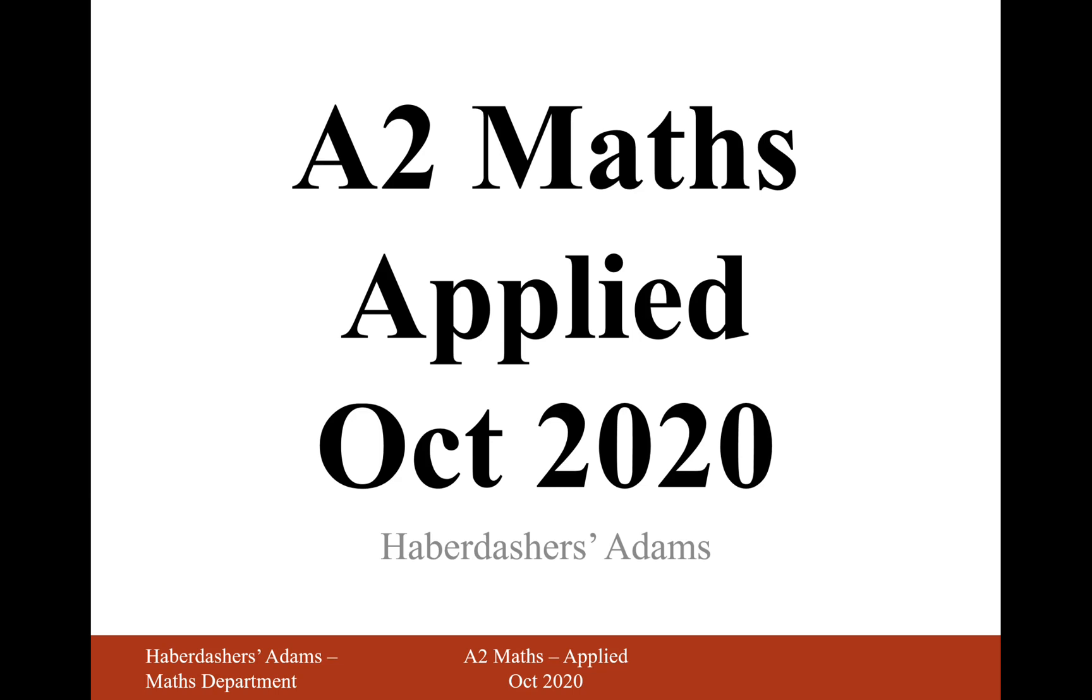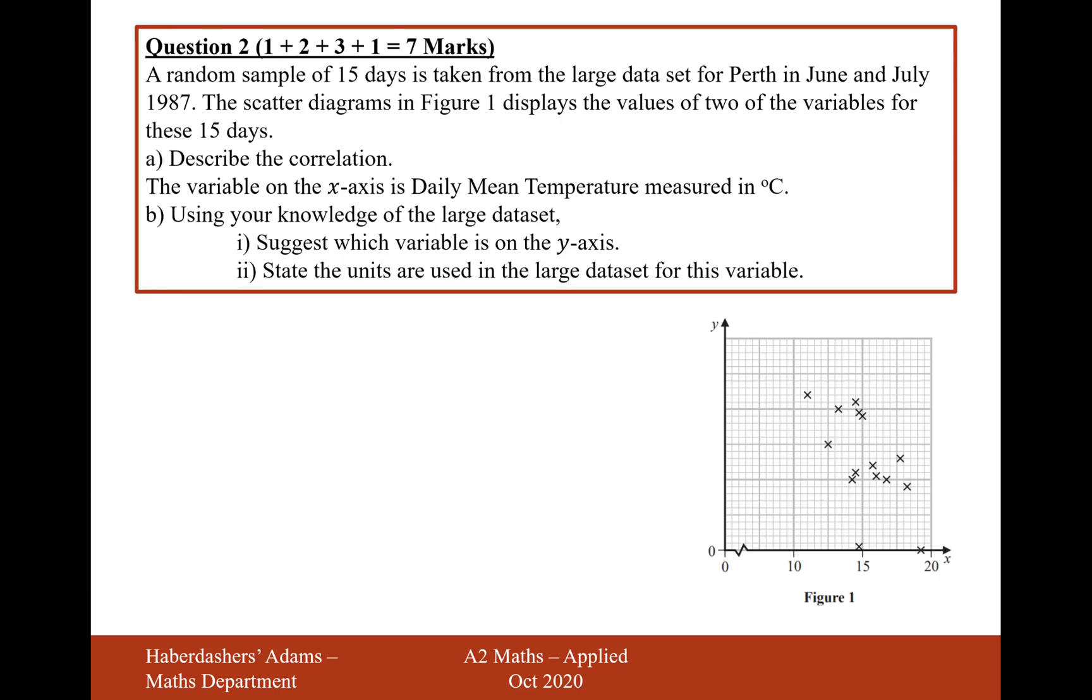Hello there, welcome to your October 2020 applied paper. Here we're looking at question 2. A random sample of 15 days is taken from the large data set for Perth in June and July 1987. The scatter diagram in figure 1 displays the values of two of the variables for these days.